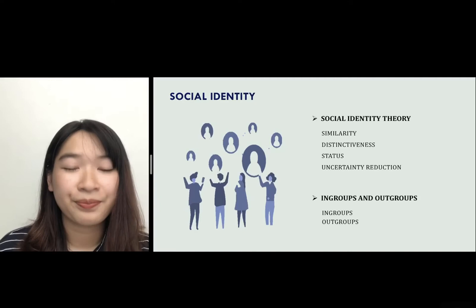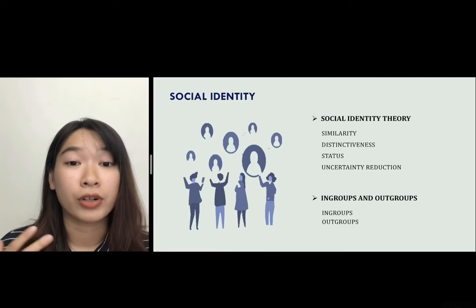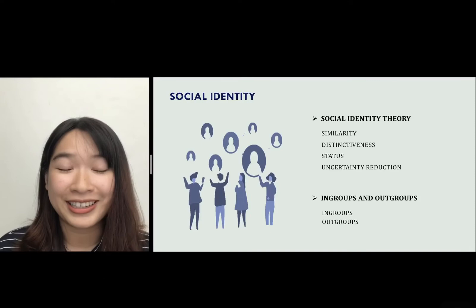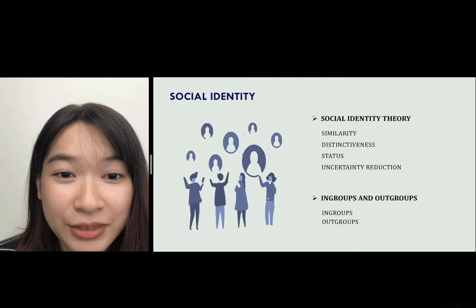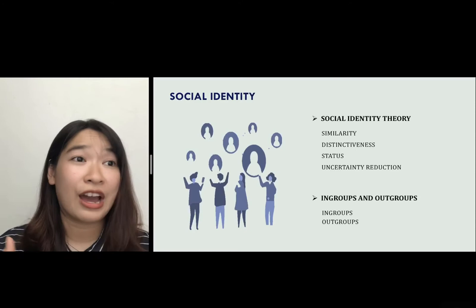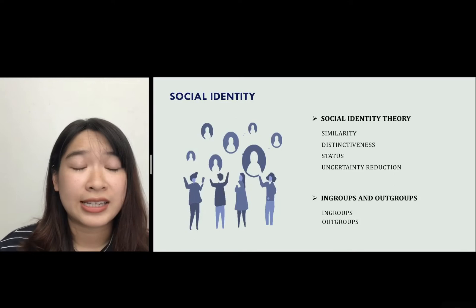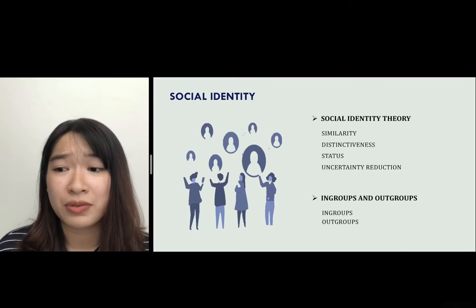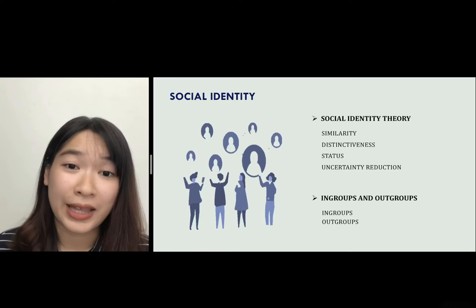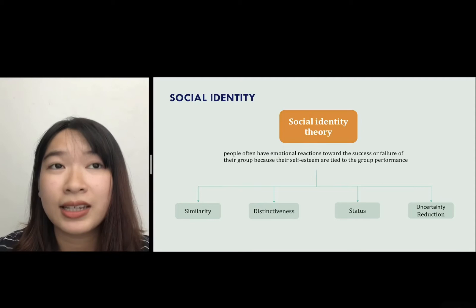Social identity theory shows that people often have emotional reactions to the success or failure of a group because their self-esteem is closely tied to group performance. For example, if you go to the stadium to support your favorite football team and your team wins, you and other fans would be obviously proud and giddy with happiness. However, another team's fan would feel extremely embarrassed even though they were not the cause of the loss. That explains social identity theory. There are four elements derived from the theory: similarity, distinctiveness, status, and uncertainty reduction.